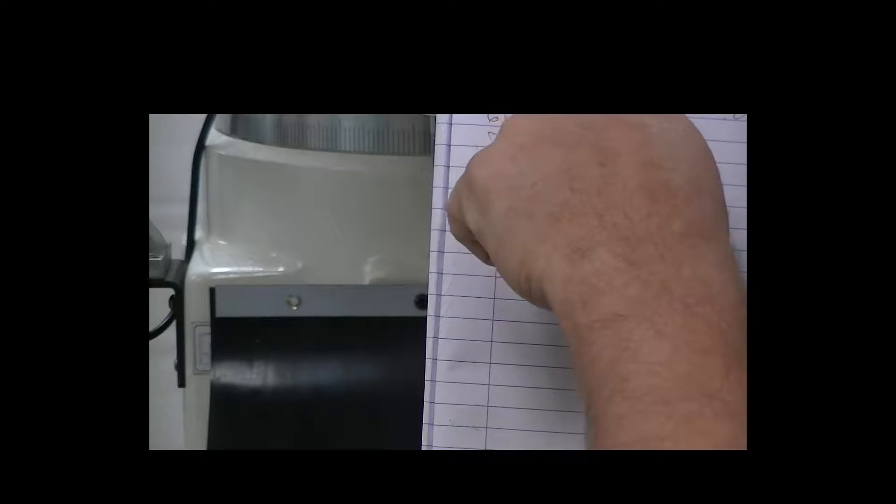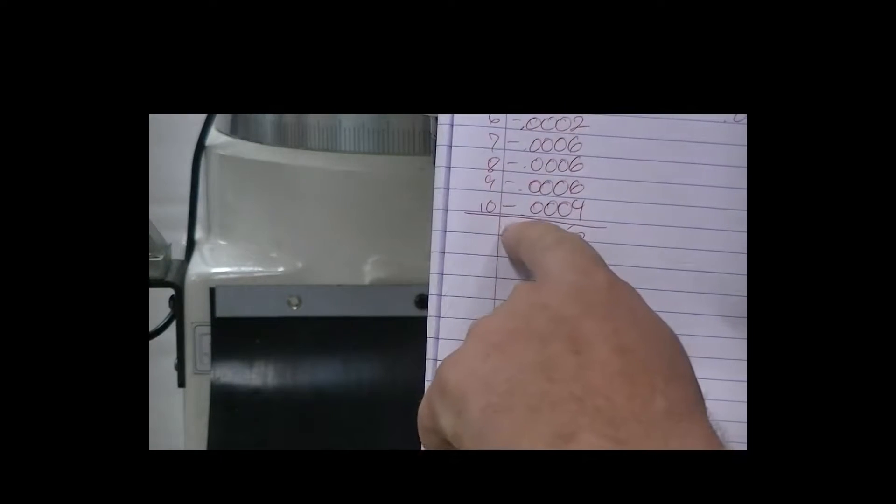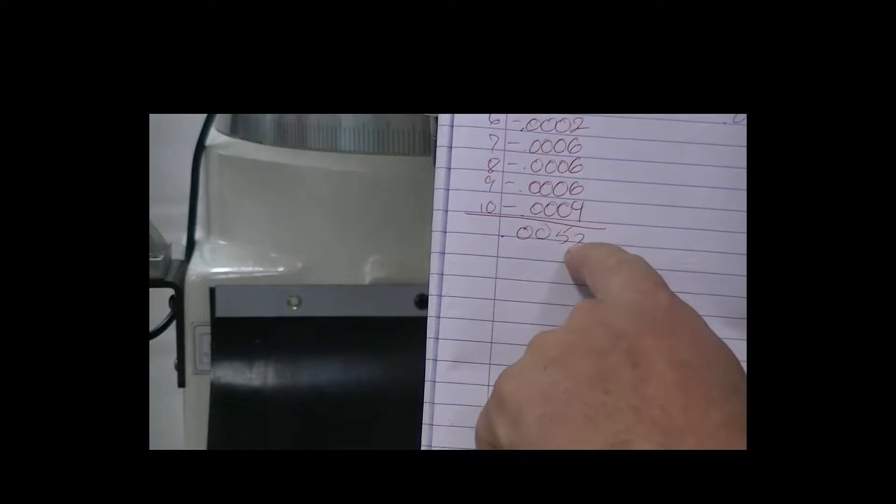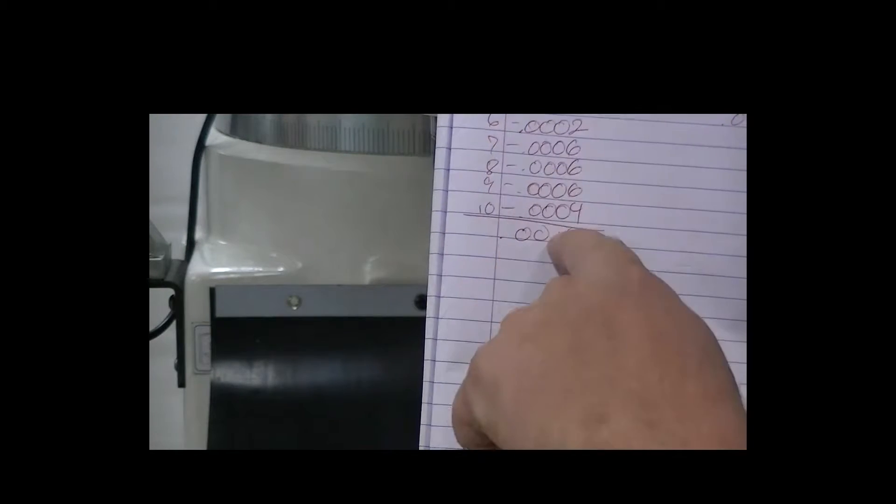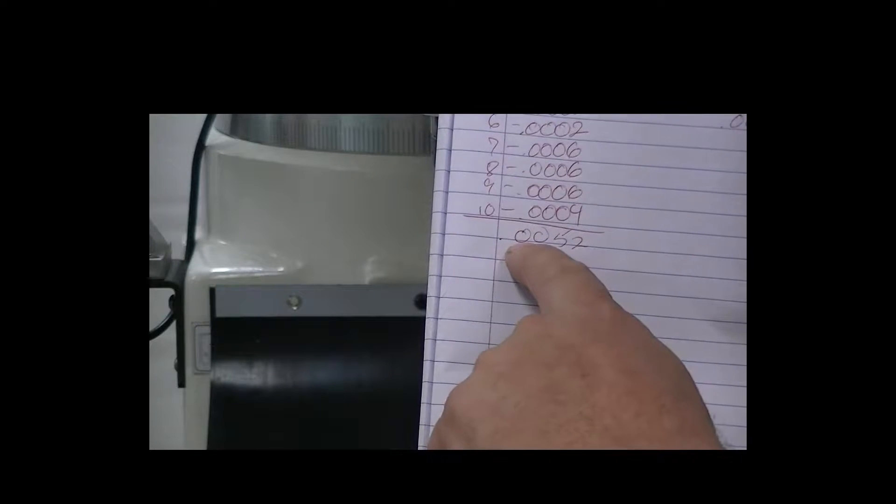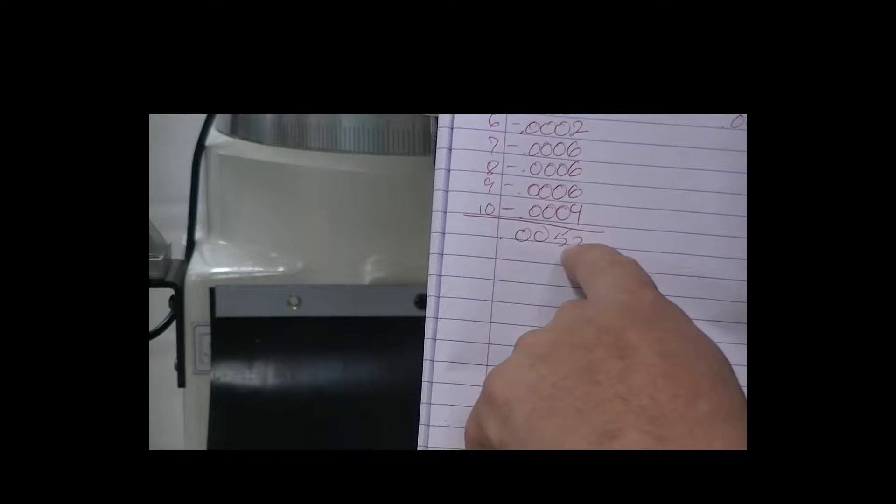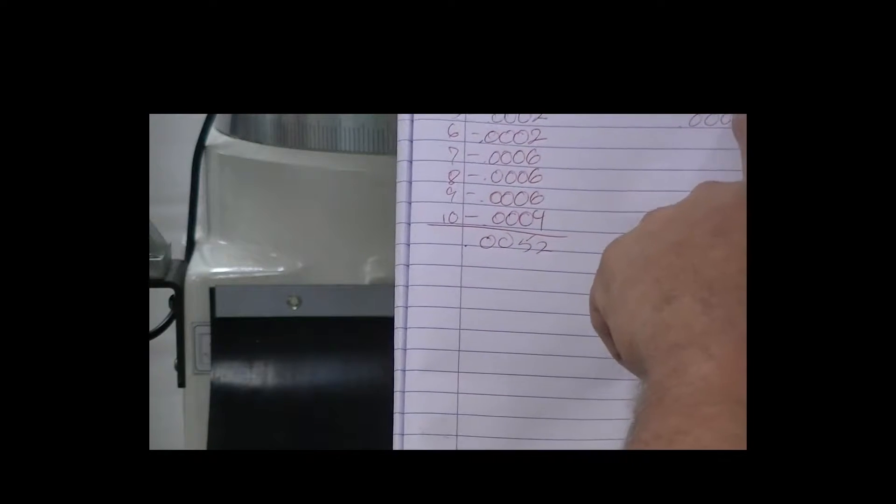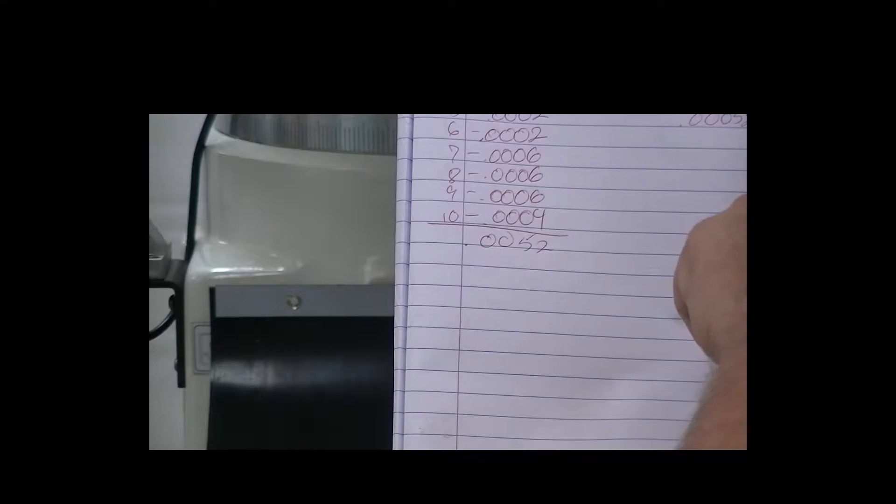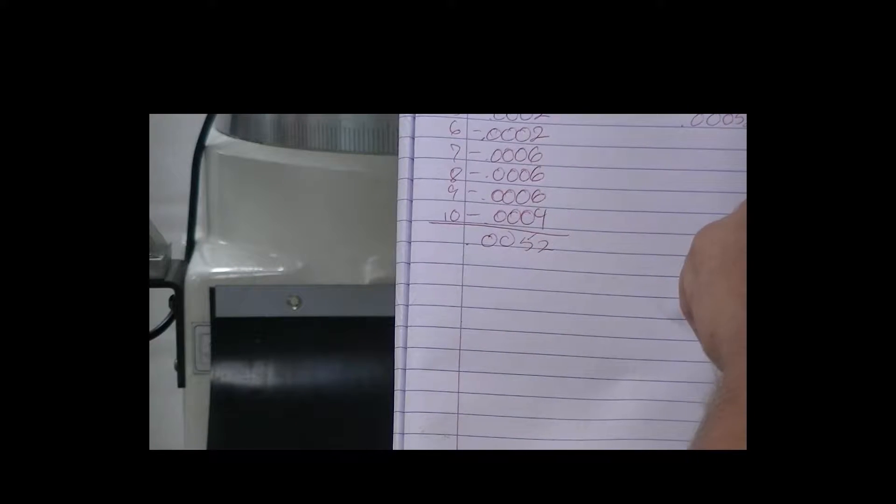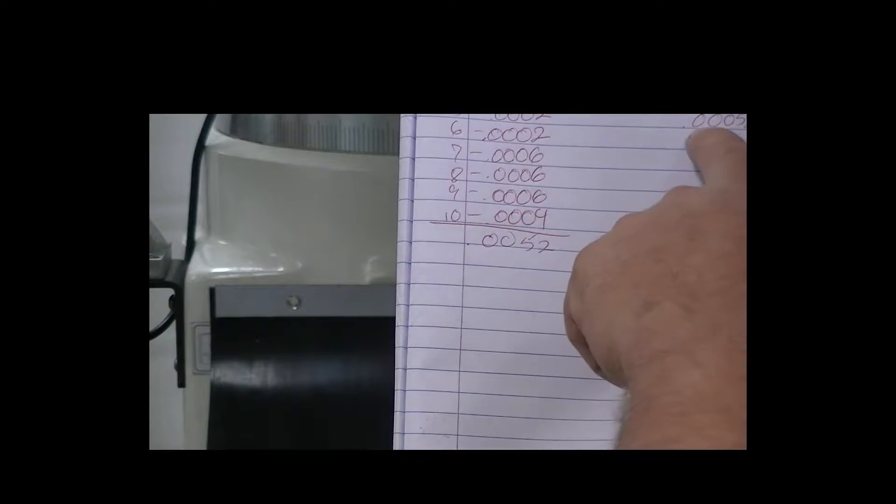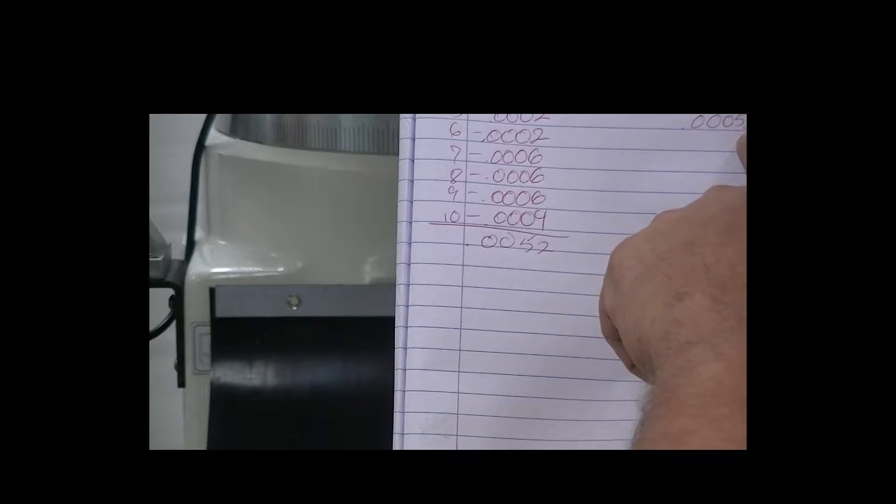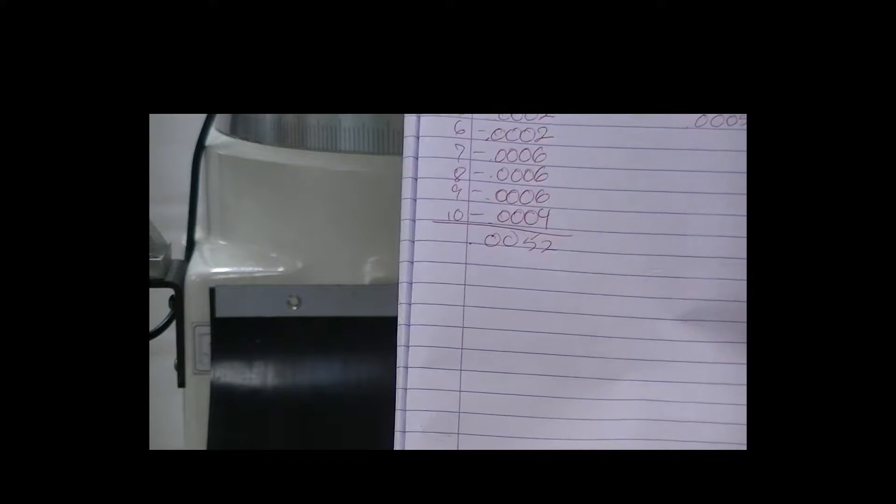Measuring the four inch gauge block, Mike made ten measurements. And the total for the entire, if we added all of the error for those ten measurements, we got five thou and two tenths for ten measurements. Which means if we divide by ten, the average was five tenths and twenty millionths. Now that's for a four inch measurement. We divide that five tenths and two twenty millionths by four and we get one tenth and thirty millionths per inch of error.